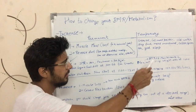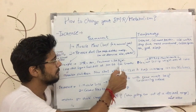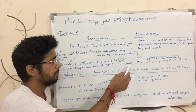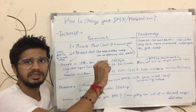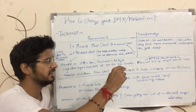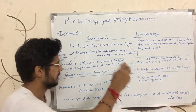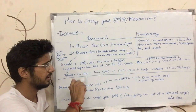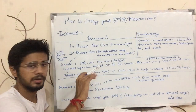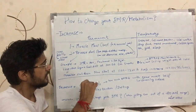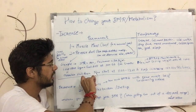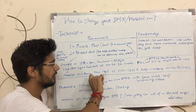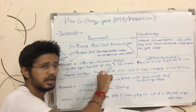So the BMR has been reduced, maintenance was reduced to 1,000 calories. When your metabolism is down, your BMR is reduced to around 1,200 calories.